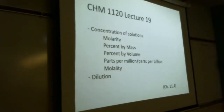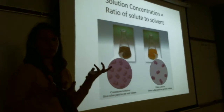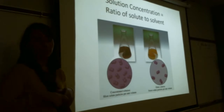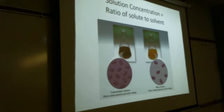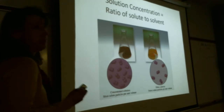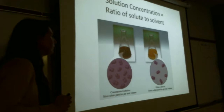We're talking about concentration of solutions today. Concentration is just the ratio of the solute to the solvent. The solute is what's being dissolved; the solvent is what's doing the dissolving. Last week we talked about what causes a solute to dissolve in a particular solvent and how quickly a solution forms. We did a lab this past week on properties of solutions, and concentration is the next logical step. Both of these solutions have the exact same solute and the exact same solvent — the only difference is the concentration, the ratio of solute to solvent.